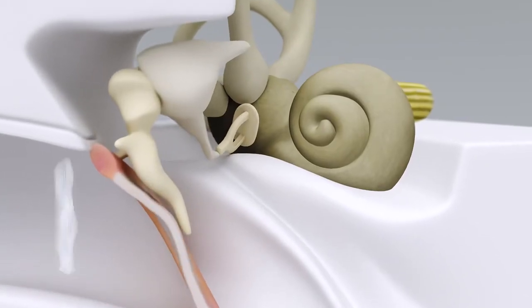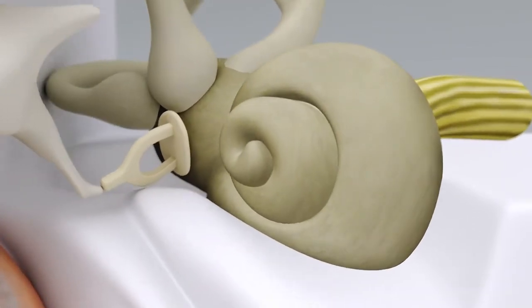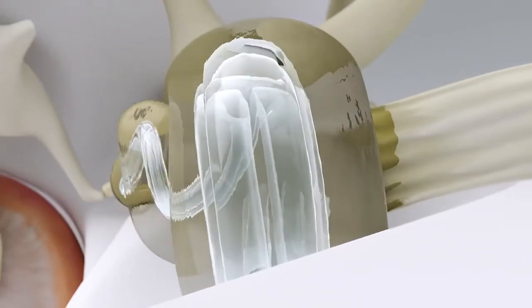In the inner ear is the cochlea, which is similar in shape to a snail shell. It contains several membranous sections, which are filled with watery fluids.